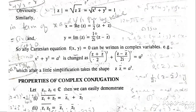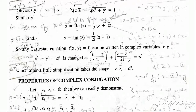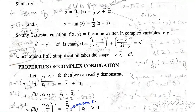We also have the identity that if we add a complex number z = x + i·y with its conjugate x − i·y, the imaginary parts cancel and dividing by 2 gives x, which is the real part of z. Similarly, subtracting z̄ from z and dividing by 2i gives y, the imaginary part of z.